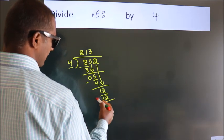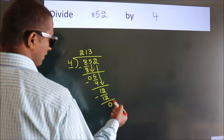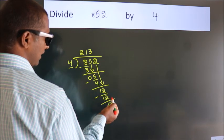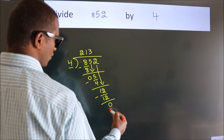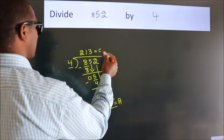Now we subtract. We get 0. After this, no more numbers to bring it down. So we stop here. This is our remainder. This is our quotient.